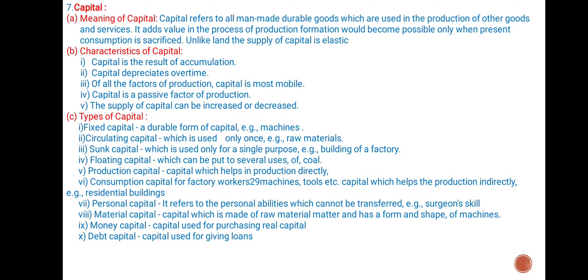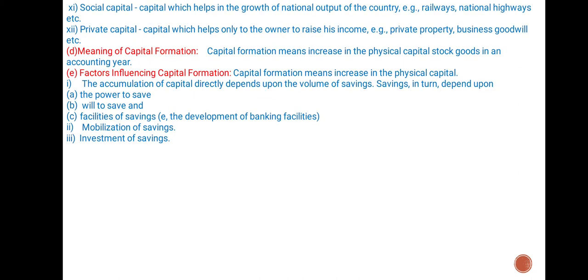Personal capital refers to the personal abilities which cannot be transferred, for example, a surgeon's skill. Material capital is capital which is made of raw material and metal and has a form and shape, for example, machines. Money capital is capital used for purchasing real capital. Debt capital is capital used for giving loans. Social capital is capital which helps in the growth of national output of the country, for example, railways, national highways, etc. Private capital is capital which helps only the owner to raise his income, for example, private property, business, goodwill, etc.